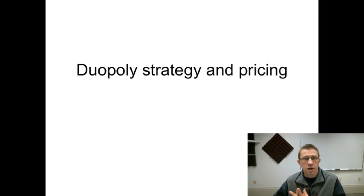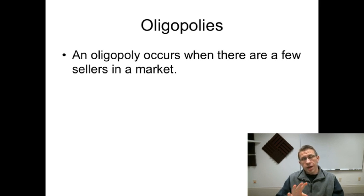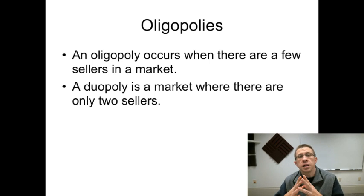Okay, welcome to our game theory lesson on duopoly strategy and pricing. As we know from principles of microeconomics, an oligopoly is a type of market where there's a few sellers—not one as you see in a monopoly, but not many like monopolistic competition and perfect competition. An oligopoly has a few, and a duopoly is just an oligopoly with only two sellers.